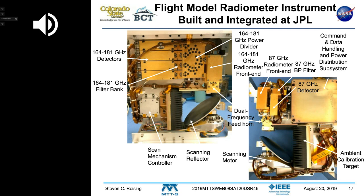Has terahertz remote sensing for rain and humidity already been tried, or will the next CubeSat be one of the first attempts? The Europeans are launching a sensor to measure cloud ice — an operational sensor on a large satellite — on Metop Second Generation, approximately in 2021.